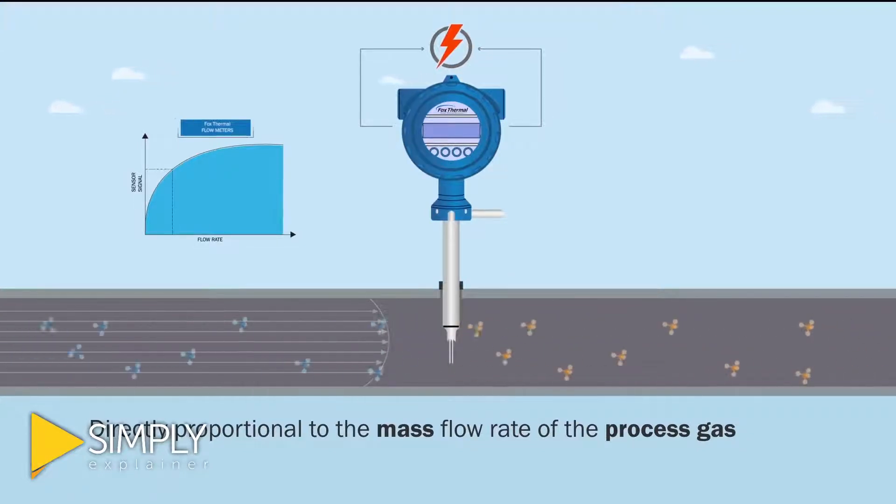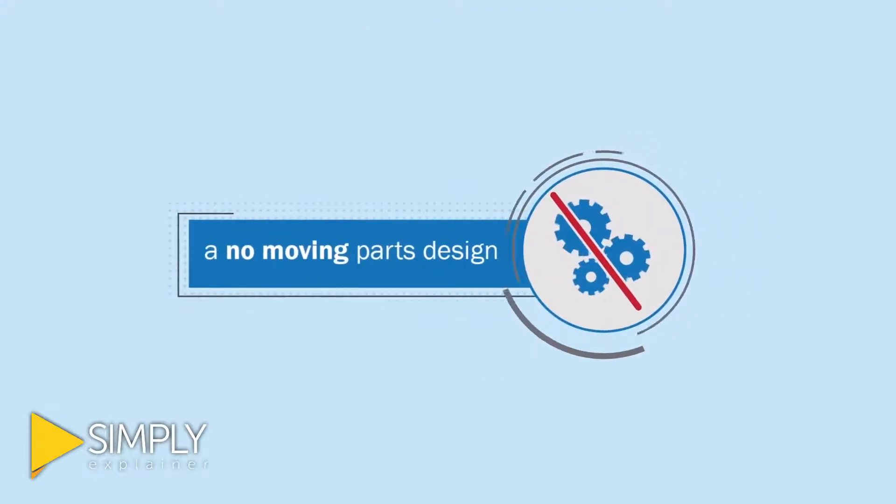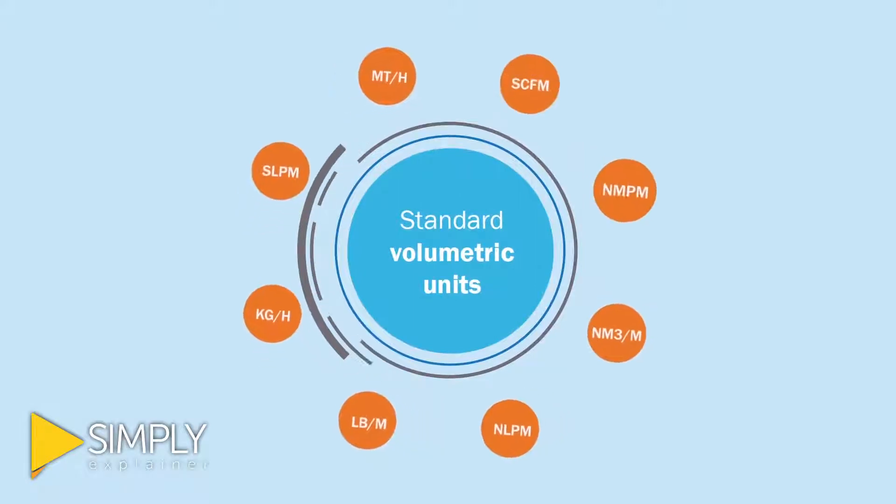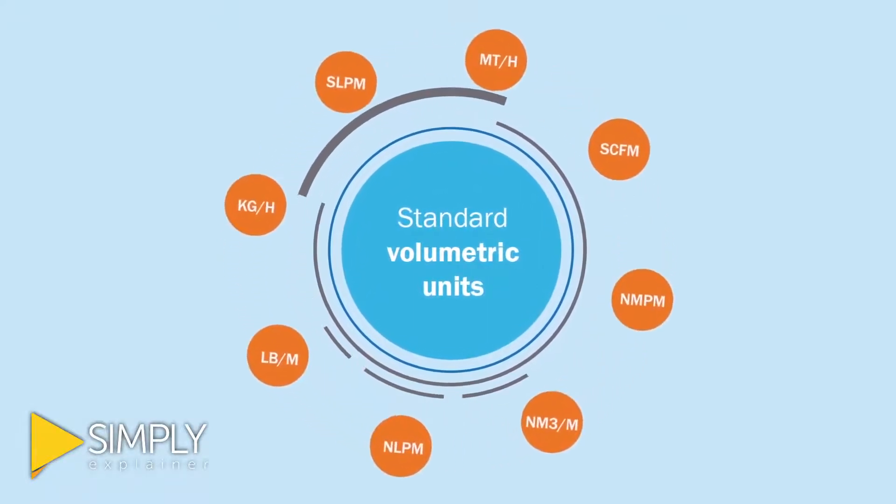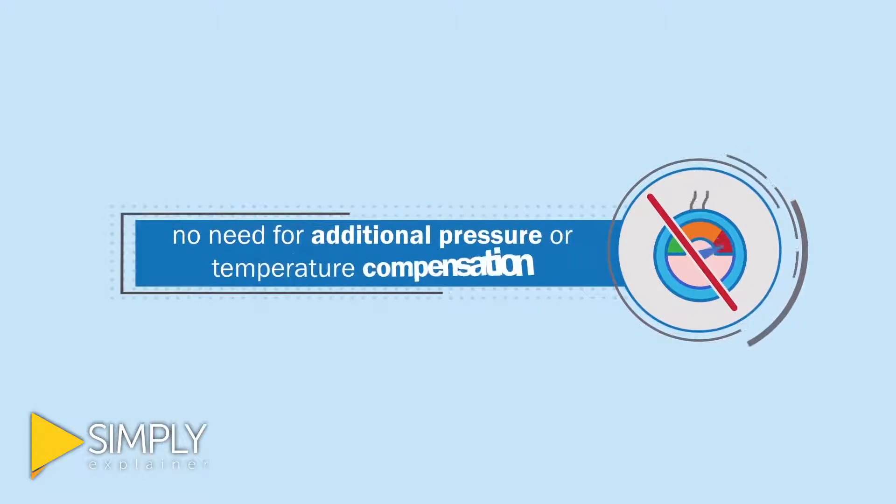All thermal mass flow meters operate under this principle. The benefits of this technology include a no moving parts design, the direct mass flow measurement of air and gases in standard volumetric units, and there is no need for additional pressure or temperature compensation.